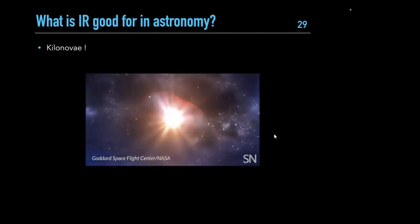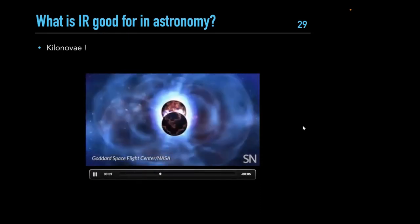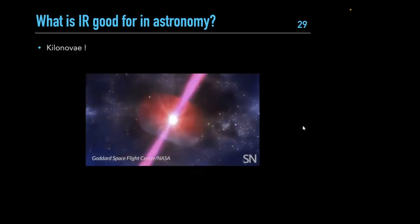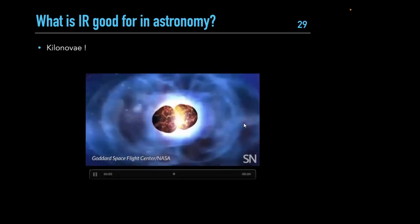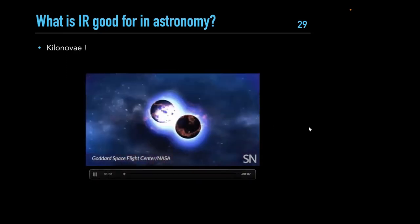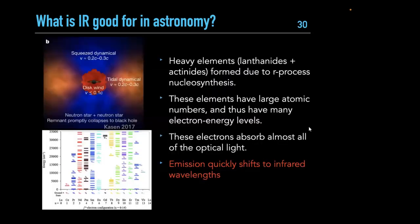Kilonovae are transients that accompany merging neutron stars — as two neutron stars spiral in by emitting gravitational waves and finally merge, ejected material powers a short-lived, fast-evolving transient called a kilonova. The ejecta is rich in very heavy elements like lanthanides and actinides, formed through the rare r-process nucleosynthesis — covered earlier this week by Shreya.